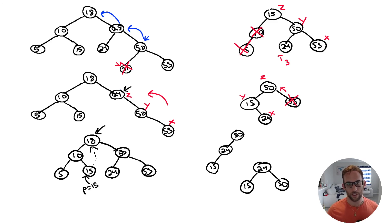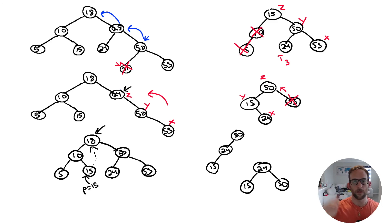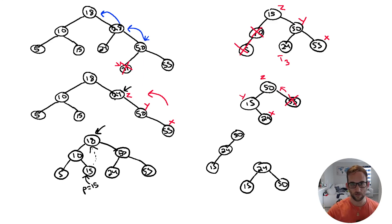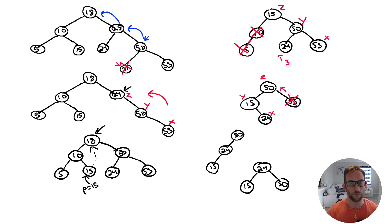To summarize AVL deletion: perform the same deletion as a BST using the three cases — zero, one, or two children. After deletion, go to the parent node and work your way up the tree. If anything is imbalanced, label Z, Y, and X and perform the appropriate rotations. If you have any questions leave them in the comments, and thanks for watching.